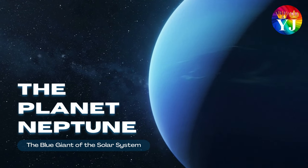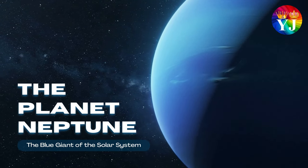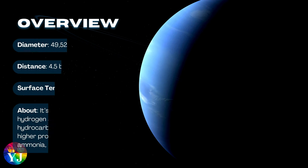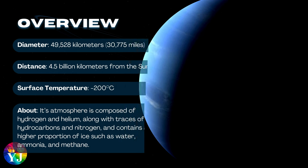The planet Neptune, the blue giant of the solar system. Overview of Neptune: Diameter 49,528 kilometers, Distance 4.5 billion kilometers from the Sun, Surface temperature minus 200 degrees Celsius. About Neptune: Its atmosphere is composed of hydrogen and helium.